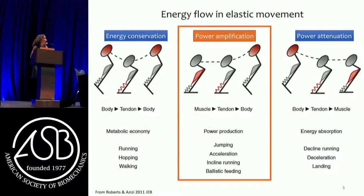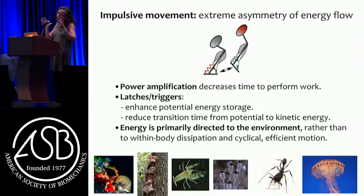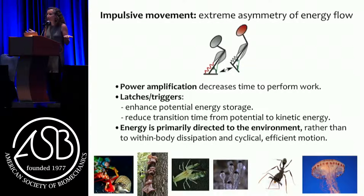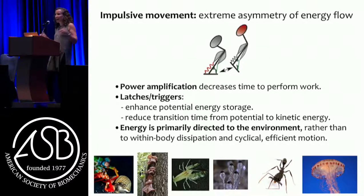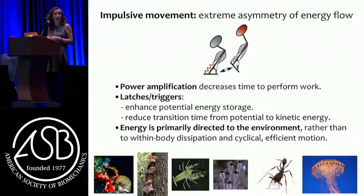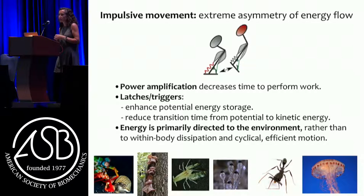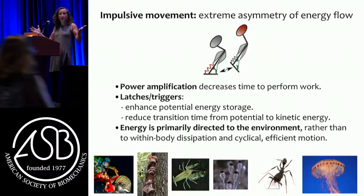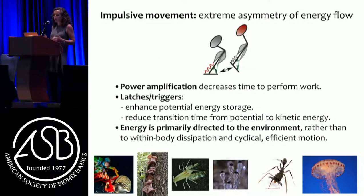What I'm going to do today is talk about a subset — or maybe even a separate category — of power amplification and motion, which I'll call impulsive movement. I've been working with a team of scientists and engineers on what to call this realm; a few weeks ago it was 'ultra-fast,' today it's 'impulsive,' so I'd love a discussion about the right word. When I say impulsive movement, I mean truly extreme asymmetry of energy flow, systems that decrease the time to perform work, incorporating latches and triggers. These latches allow for greater potential energy storage and reduce the transition time from potential to kinetic energy.